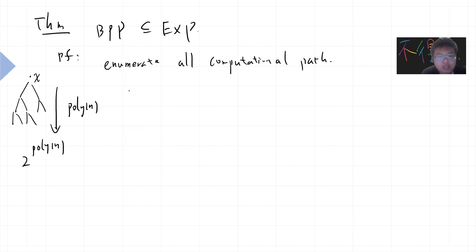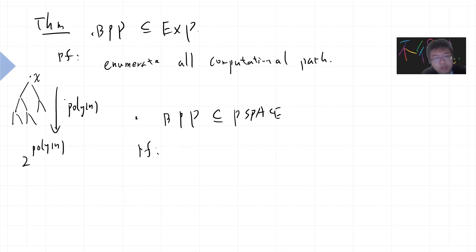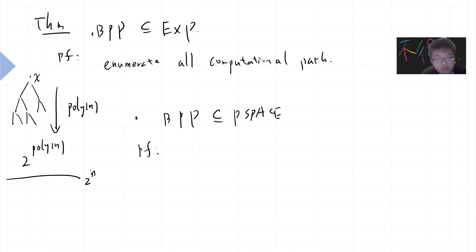Another theorem, which is also simple: BPP is a subset of PSPACE. The proof is also one sentence. Originally we enumerate all computational paths, but now for each computational path, we can reuse space. We get 2^poly(n) paths, but we only need poly(n) bits to represent the randomness.